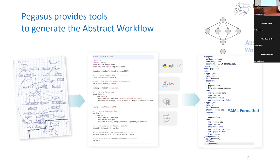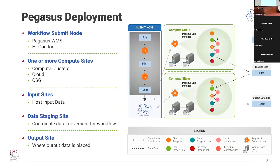What does the Pegasus deployment look like? There is a workflow submit node or access point node where you install Pegasus and HTCondor — that's the place where you interact with Pegasus and launch your workflows. As the user, you can get Pegasus to run your workflow on one or multiple compute sites. The compute sites can connect to a local cluster, Open Science Grid, or a cloud resource where Condor workers are provisioned in AWS or Google Cloud.